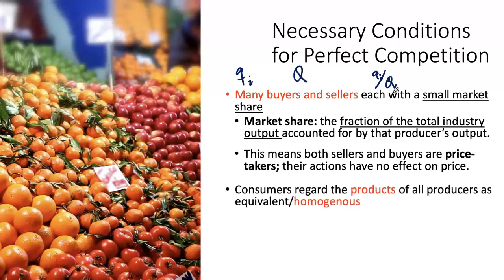The next important condition for perfect competition is that the product produced by all firms is homogenous — very similar or exactly the same. This ensures that if any one of them charges a higher price, nobody will essentially buy from that producer. Everyone buys the exact same product from someone selling it cheaper. Therefore, with a homogenous product, no independent seller can increase or change the price.